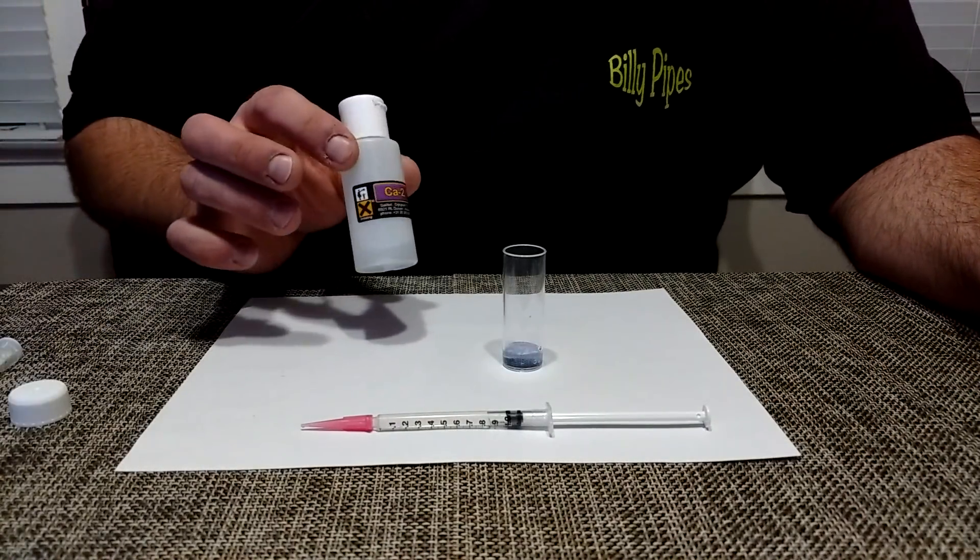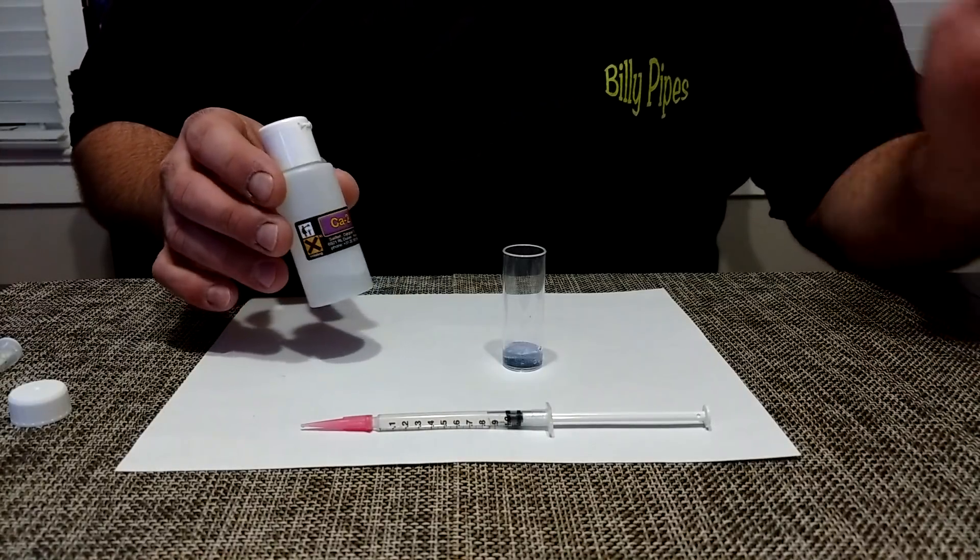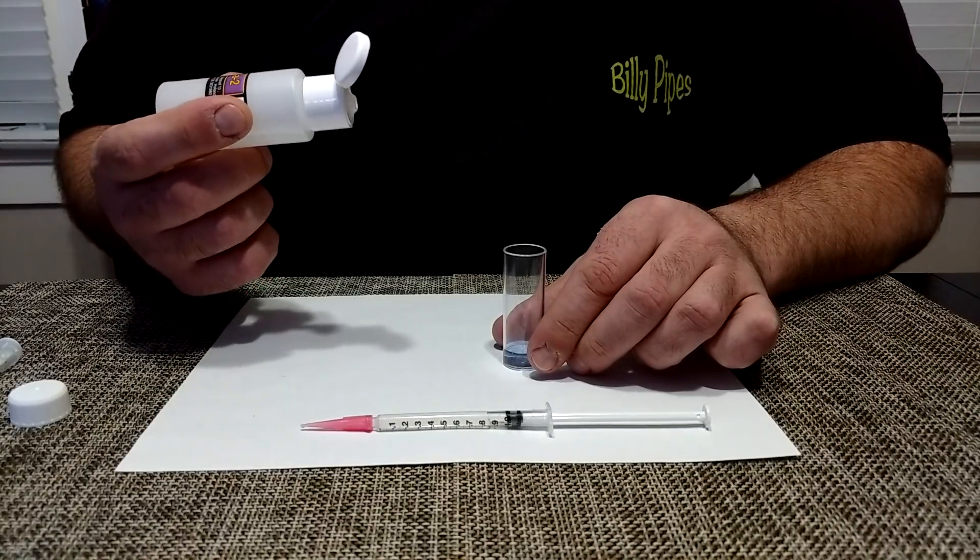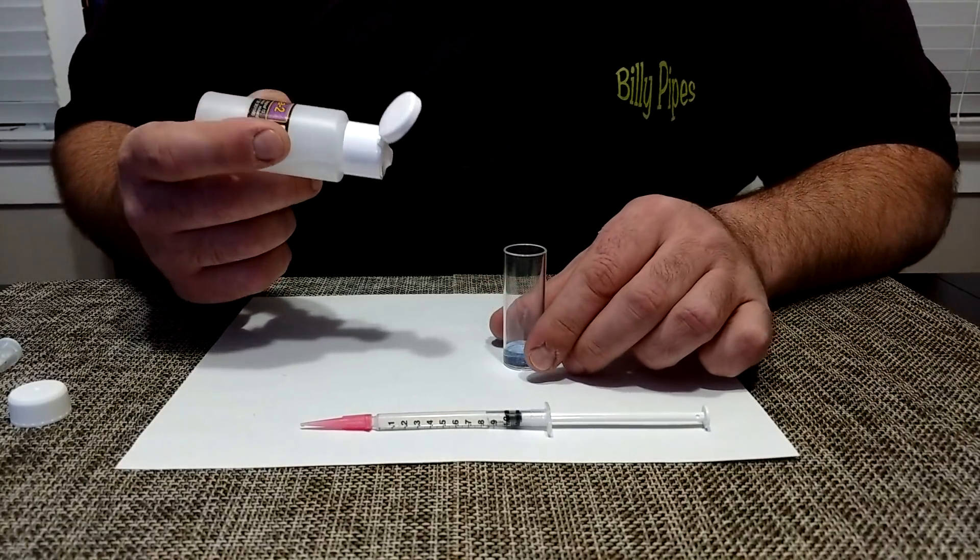Next step is to add eight drops of the CA-2. I like to spill out the first drop to get myself situated.